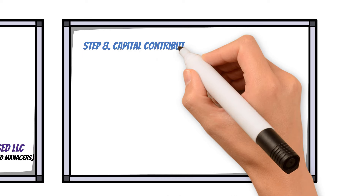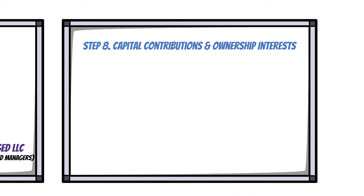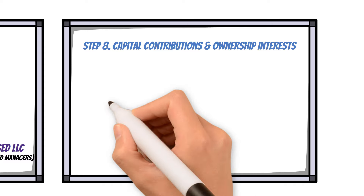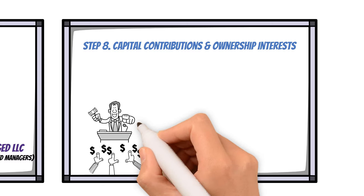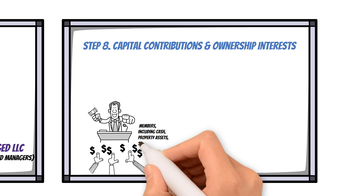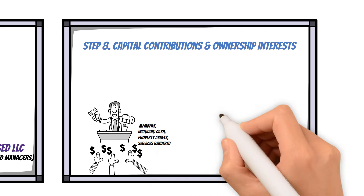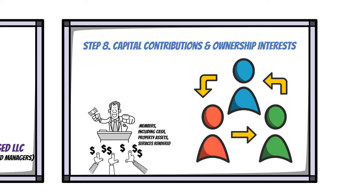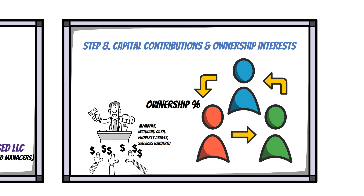Step 8: Capital Contributions and Ownership Interests. Outline how capital contributions will be made by members, including cash, property assets, services rendered, etc., along with their corresponding ownership percentages or units distribution among members.